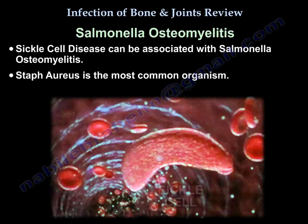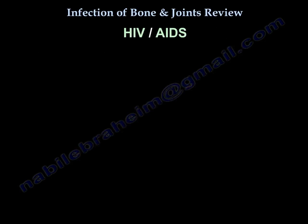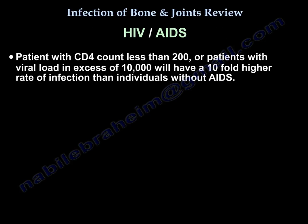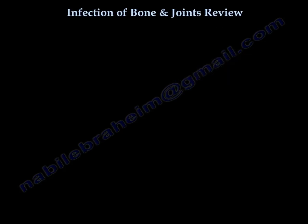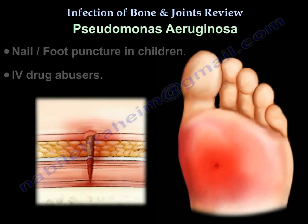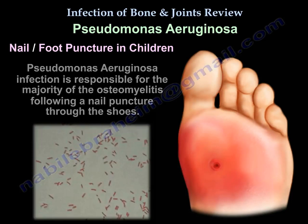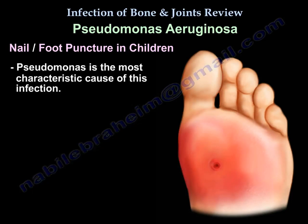Sickle cell disease is associated with Salmonella osteomyelitis, though Staph aureus remains the most common organism. In HIV/AIDS, patients with a CD4 count less than 200 or a viral load in excess of 10,000 have a 10-fold higher rate of infection than individuals without AIDS. Pseudomonas infection is responsible for the majority of osteomyelitis following a nail puncture wound through a shoe in children and in IV drug abusers. Pseudomonas is the most characteristic organism for this infection.